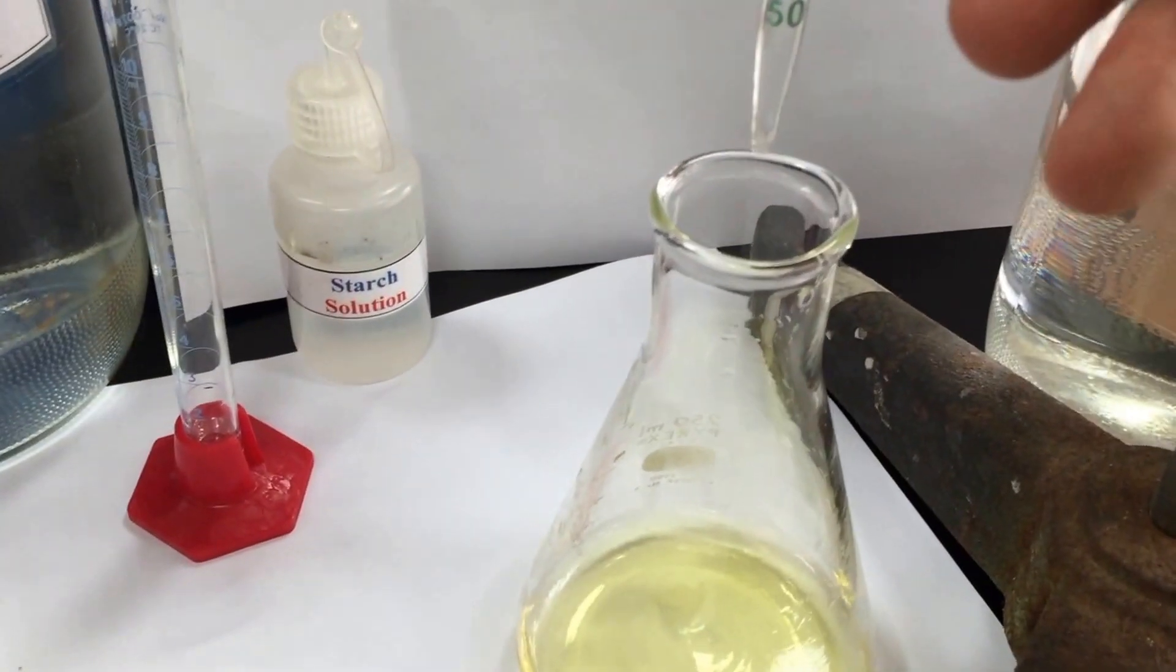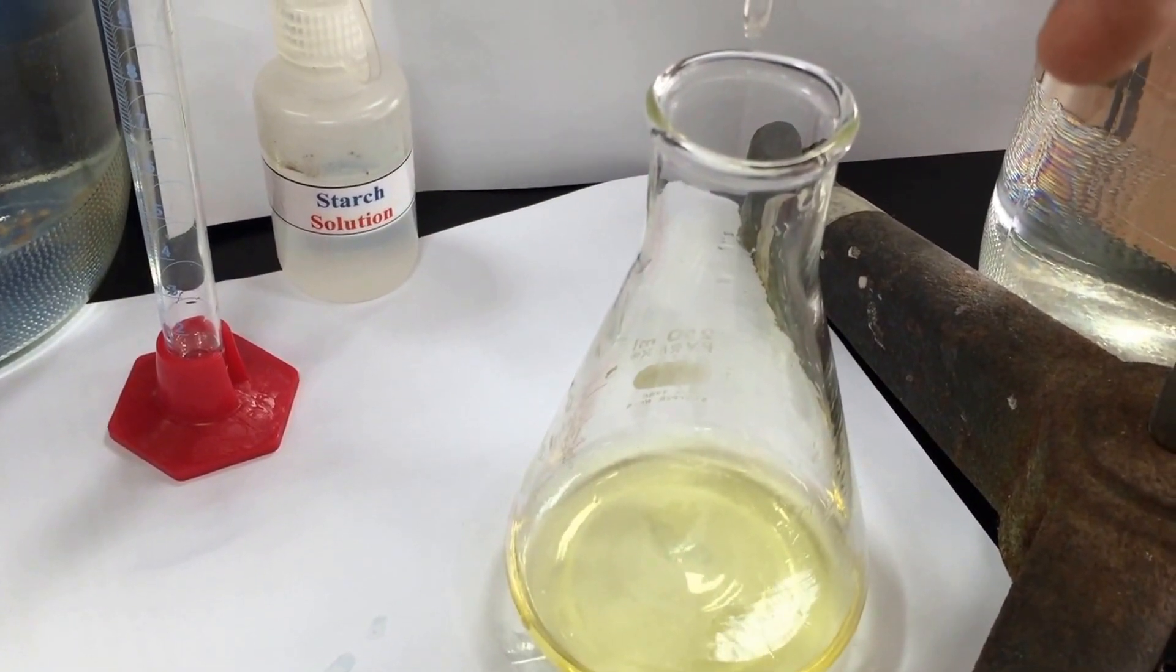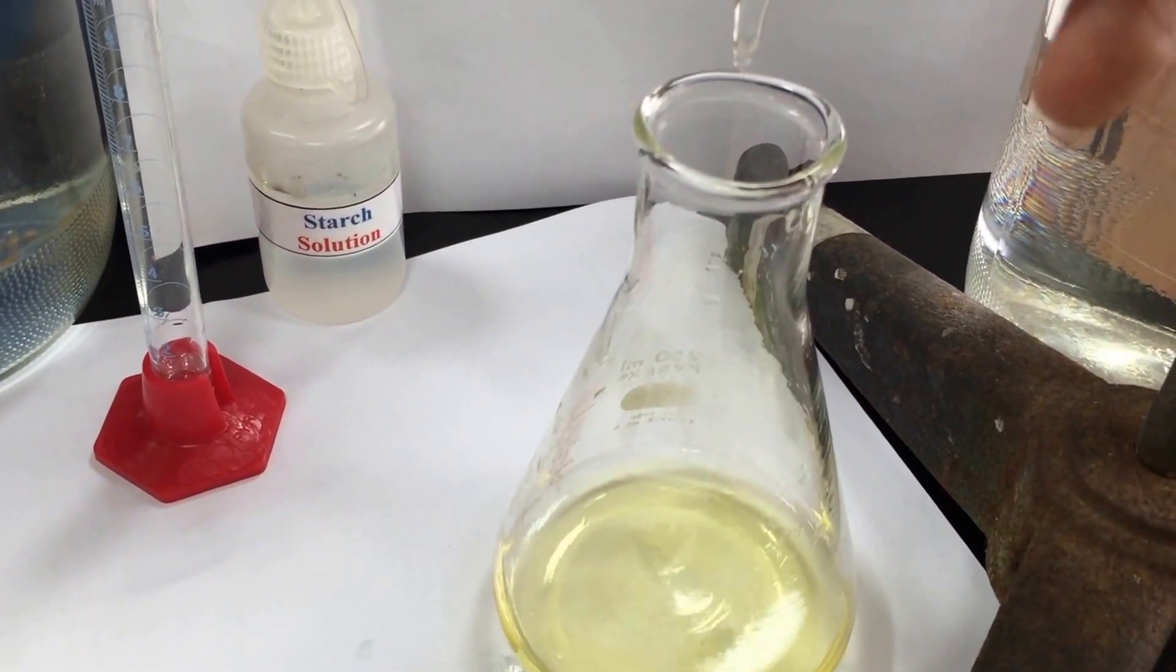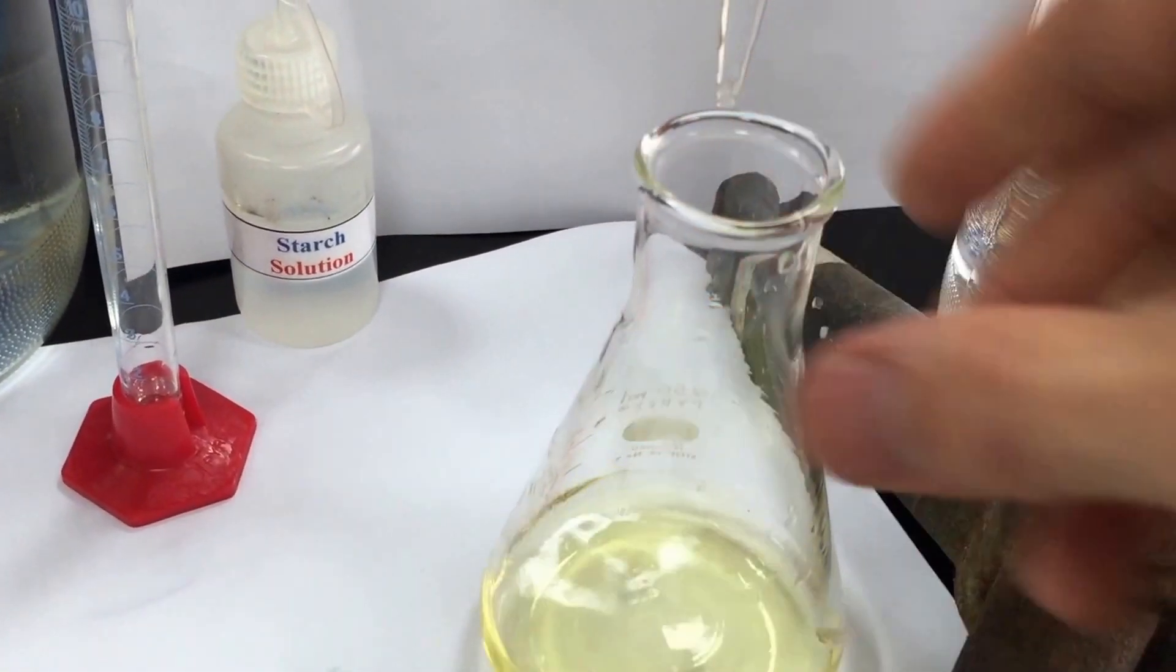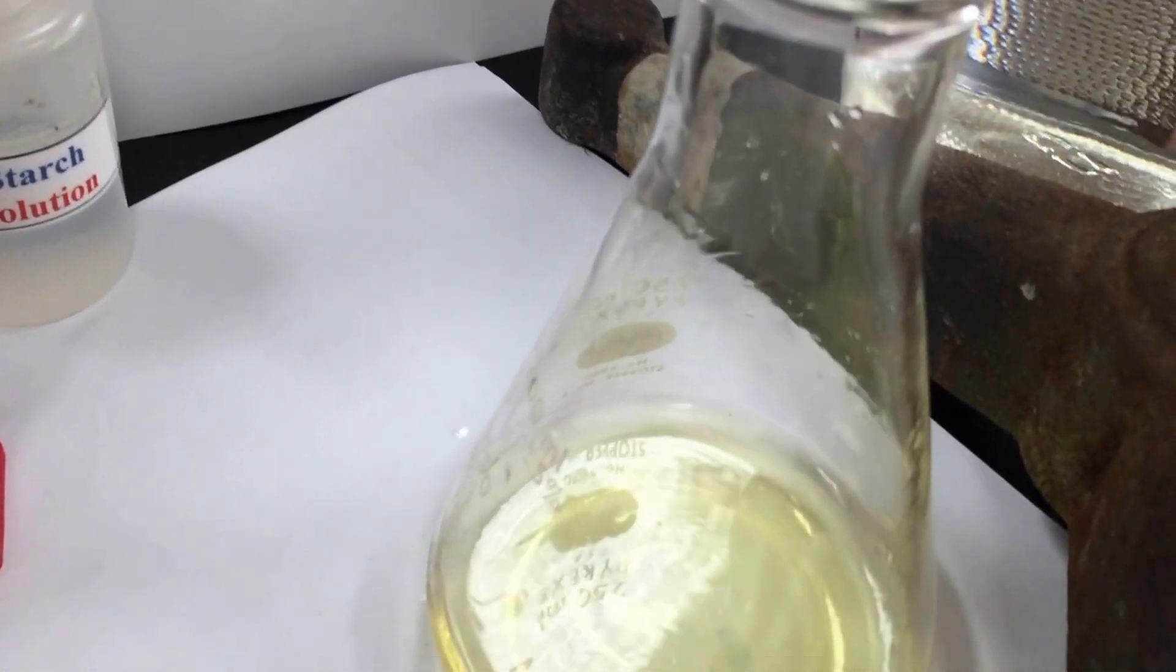I'm going to try to do this one-handed. So remember, we're just trying to get colorless or close to colorless. We don't want to go too far. Now, I've already done two or three titrations, and I know that I should have done the math here.